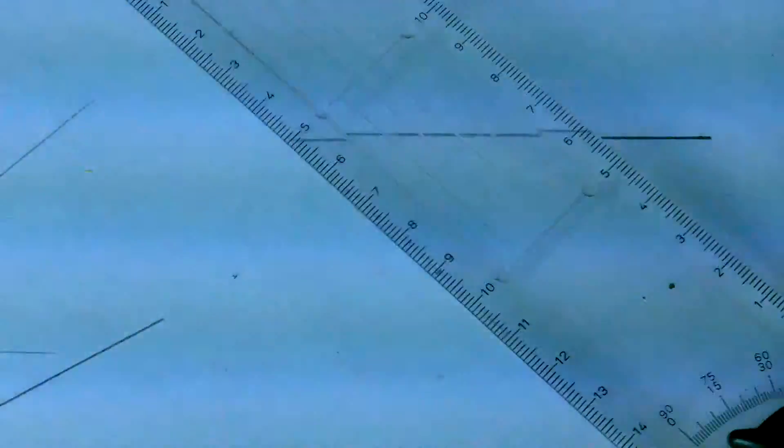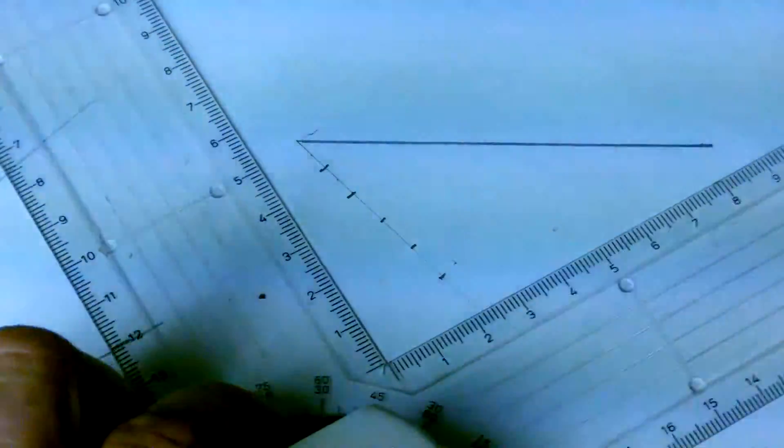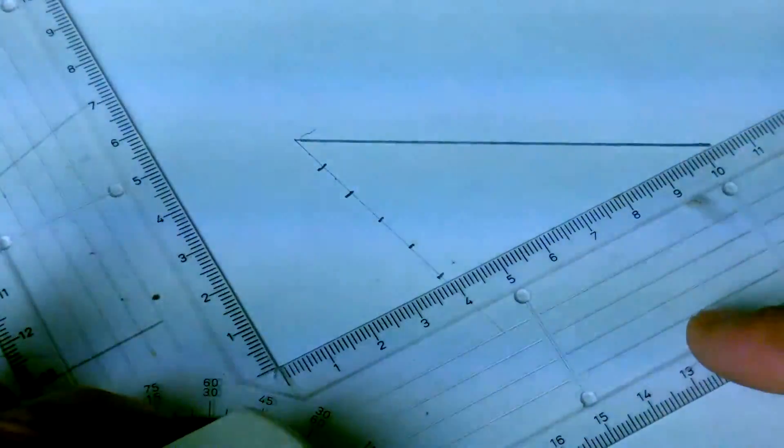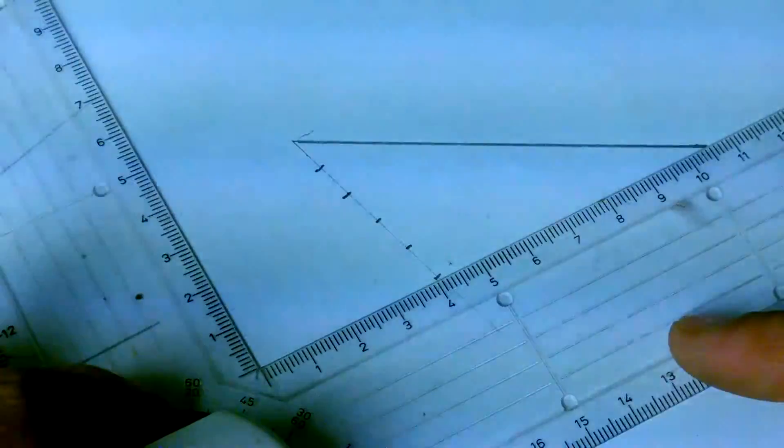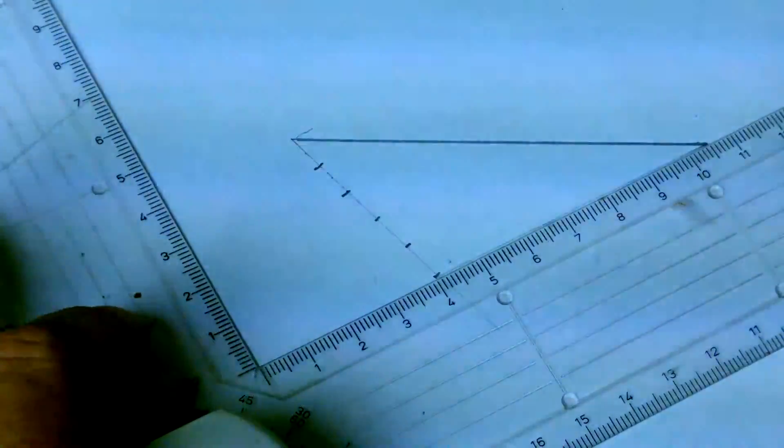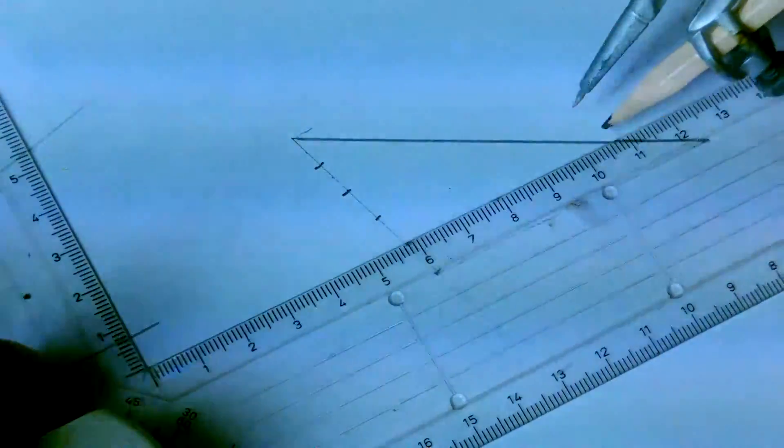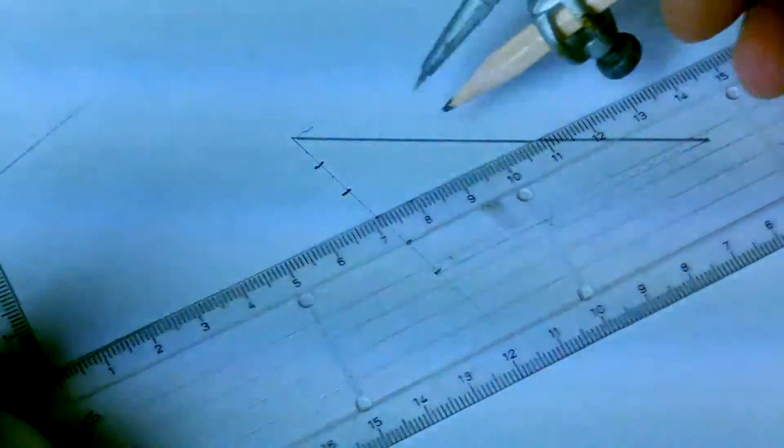Then using your set square, I'm going to connect the fifth division with the end of the line. Keeping this at the same angle, I'm going to draw parallel lines to my original line.